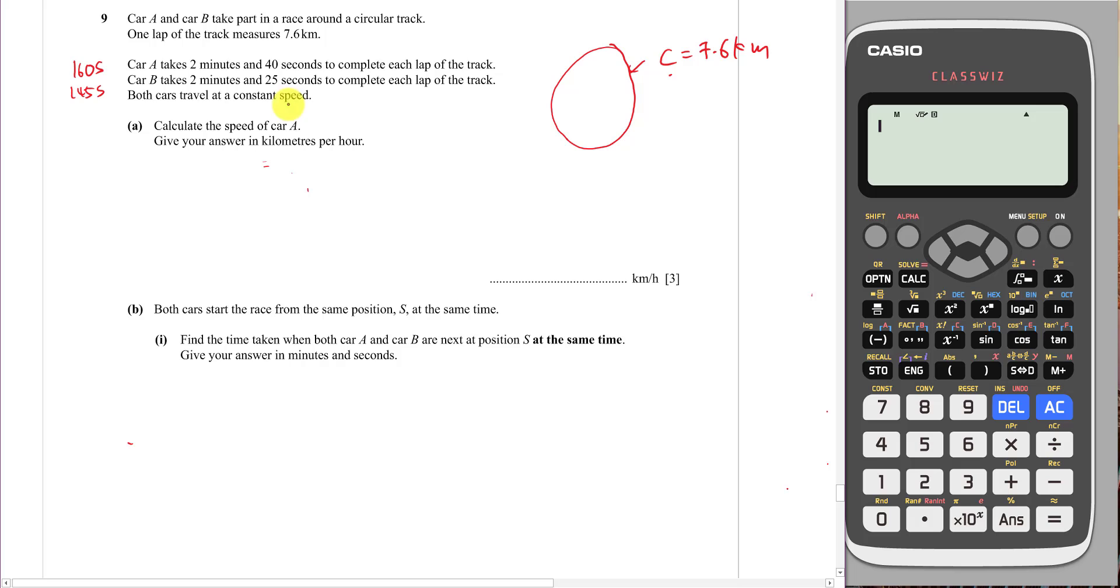Both cars travel at a constant speed, so the speed doesn't change. Part A says calculate the speed of car A, give your answer in kilometers per hour. You must be very careful because right now you have seconds only, but you need to change them into hours. We know that speed equals distance over time. Distance must be in km, time must be in hours.